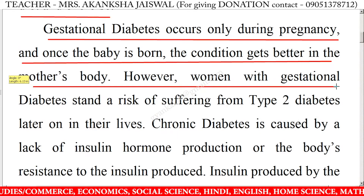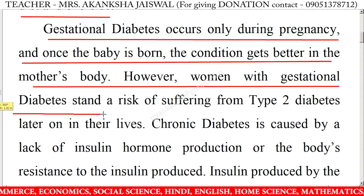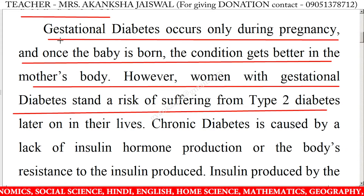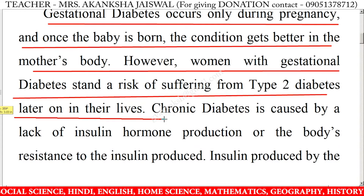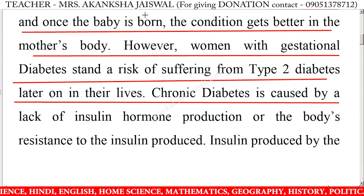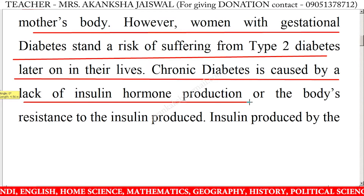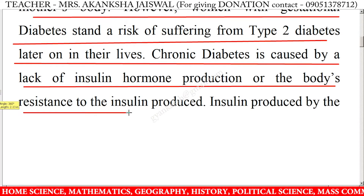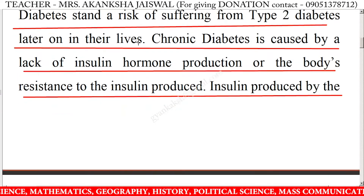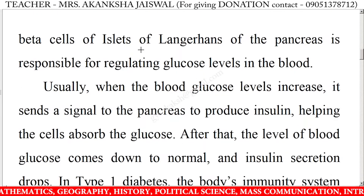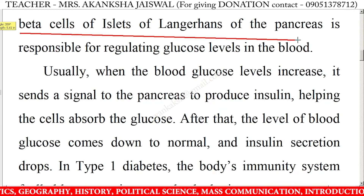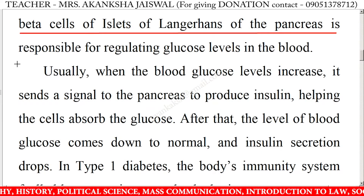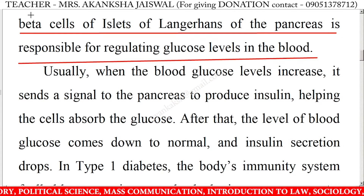However, women with gestational diabetes stand a risk of suffering from type 2 diabetes later on in their lives. Chronic diabetes is caused by a lack of insulin hormone production or the body's resistance to the insulin produced. Insulin produced by the beta cells of islets of Langerhans of the pancreas is responsible for regulating glucose levels in the body.